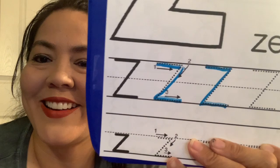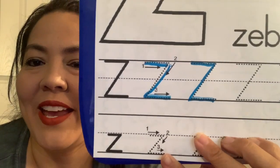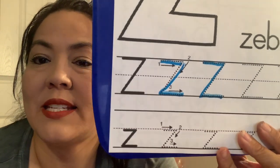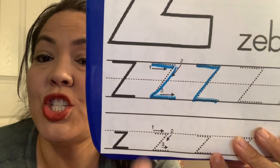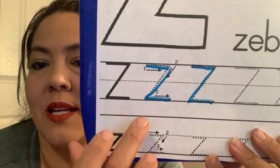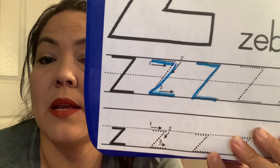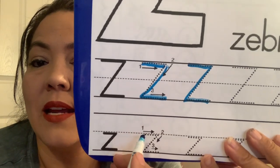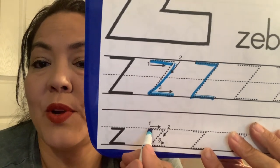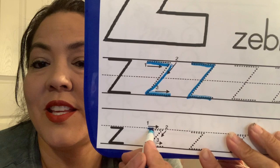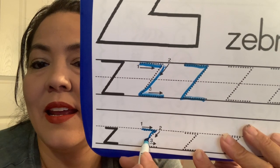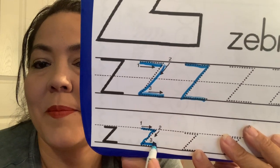Did you guys try that? Okay, now to do lowercase Z, it looks just like uppercase Z, doesn't it? Except it doesn't start at the top — it starts at the middle. So we're going to start at the middle line and follow the dots again. We're going to go across the top, down the slide again, and across the bottom.